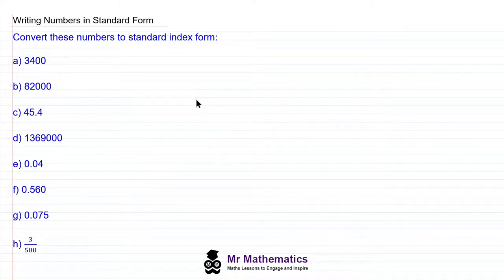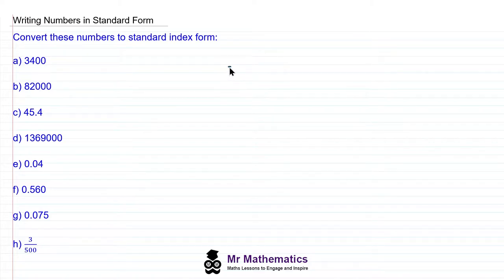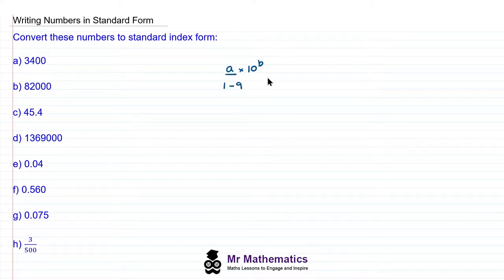In this lesson, I'm going to show you how to write numbers in standard form. Standard form is a way of writing very small and very large numbers, and it's in the form of A multiplied by 10 to the B, where A is a number between 1 and 9 inclusive, and B is a positive or negative power of 10.